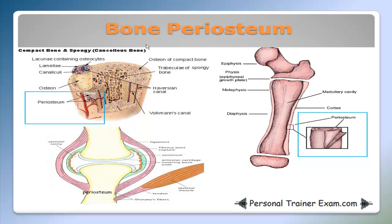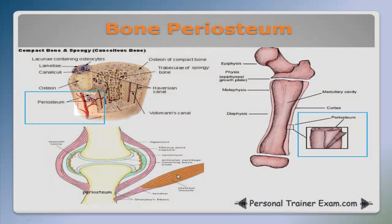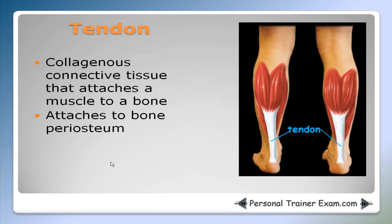Here are pictures of bone periosteum. Remember, it covers all bones, is vascular tissue containing blood vessels, and provides a strong attachment from muscle to tendon to bone. A tendon is a collagenous connective tissue that attaches a muscle to a bone, and it attaches to the bone periosteum.